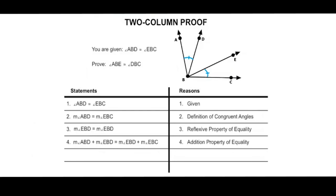Now, if you add angle ABD plus angle EBD, those two angles together form angle ABE. And if you combine angles EBD and EBC, they form angle DBC. So statement five is that the measure of angle ABE equals the measure of angle DBC. The reason is the angle addition postulate, because when we add two smaller angles together they become a larger angle.